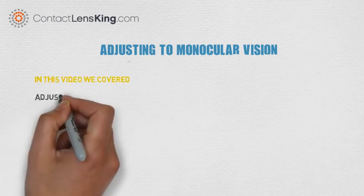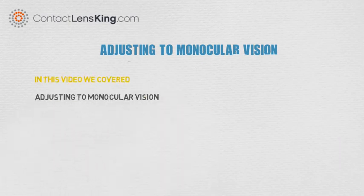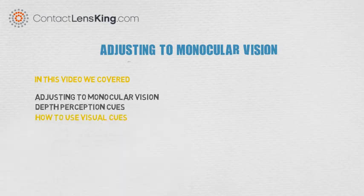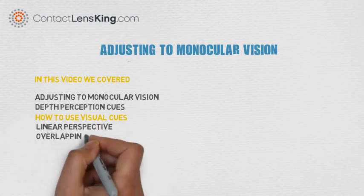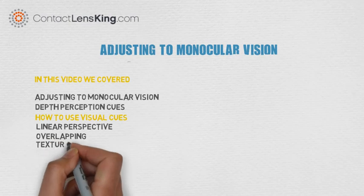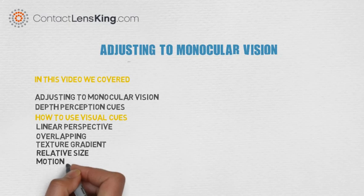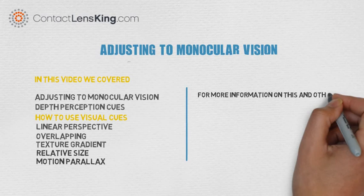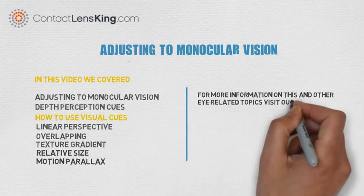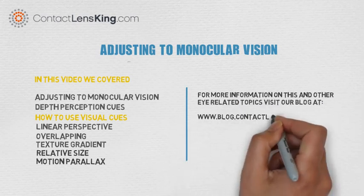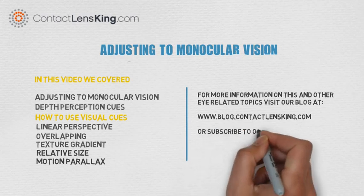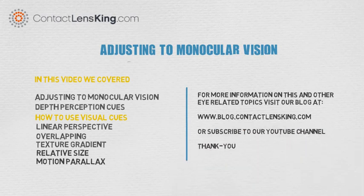In this video we covered: adjusting to monocular vision, depth perception cues, and how to use the following visual cues in perceiving depth — Linear Perspective, Overlapping, Texture Gradient, Relative Size, and Motion Parallax. For more information on this and other eye-related topics, visit our blog at blog.contactlensking.com or subscribe to our YouTube channel. Thank you.